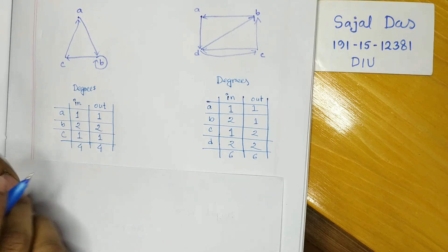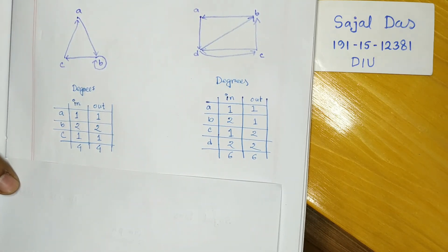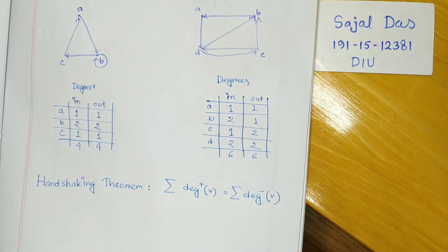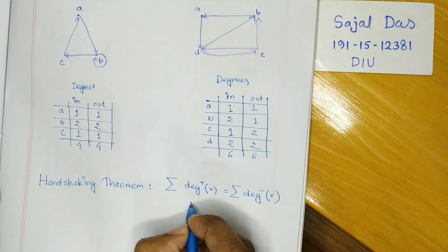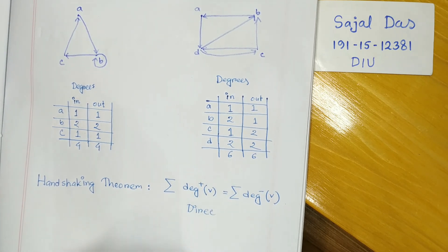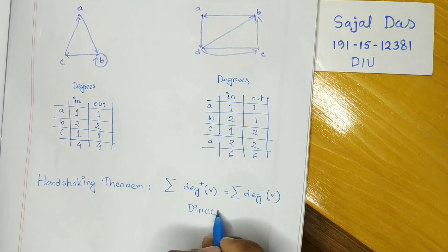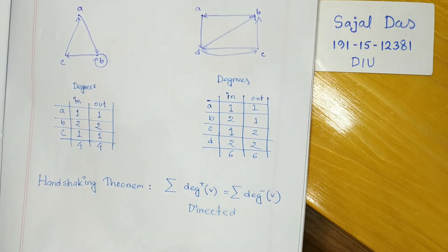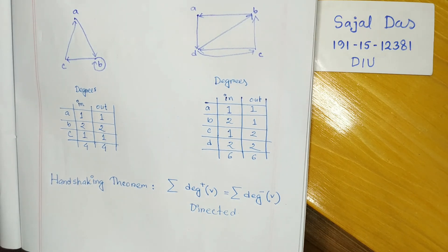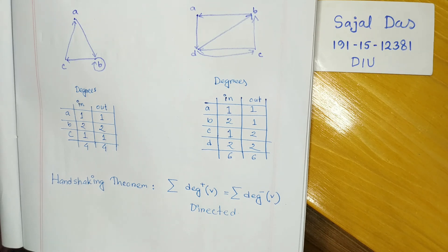The in-degrees and out-degrees are equal, and here comes the handshaking theorem for directed graphs: the summation of total in-degree equals the summation of total out-degree. That covers the two versions of the handshaking theorem, which are really important for discrete mathematics. Thank you everyone.